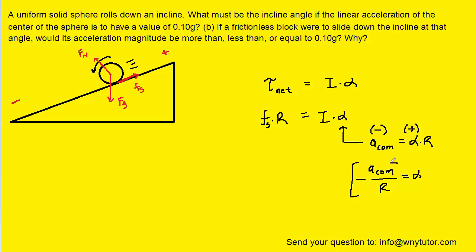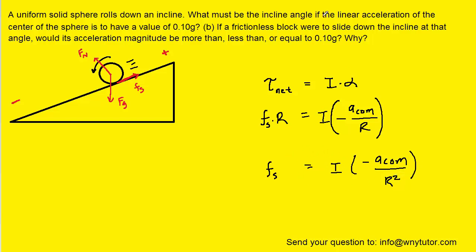We'll substitute this expression for the angular acceleration into our net torque equation. Next we can divide both sides of this equation by r to isolate the static frictional force. On the right hand side we're going to end up with r squared in the denominator. And this is a result that we're going to hold on to for just a moment.